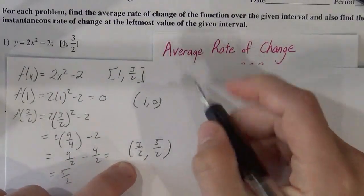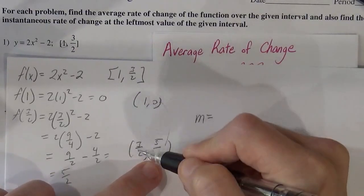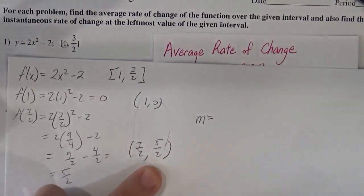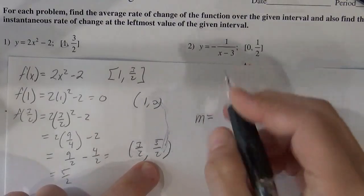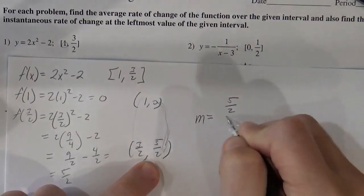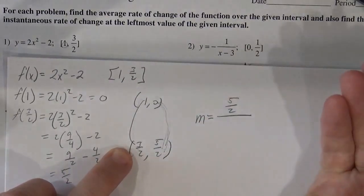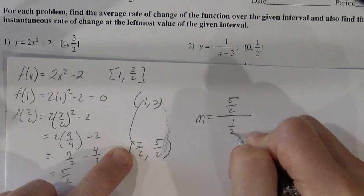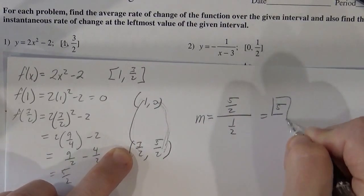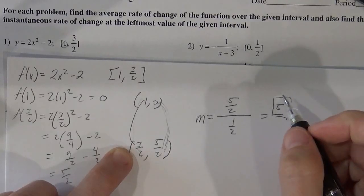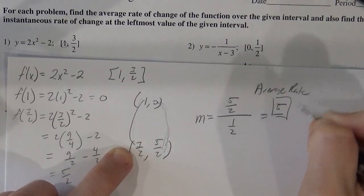So my average rate of change, my slope, is just how much did it change. You can do the full out silly formulas, but you can see that the y's went from 0 to 5 halves. So that's a change of 5 halves. And then it went from 1 to 1 and a half, so that's a half. And if I divide those, I get 5. So the average rate of change is 5.